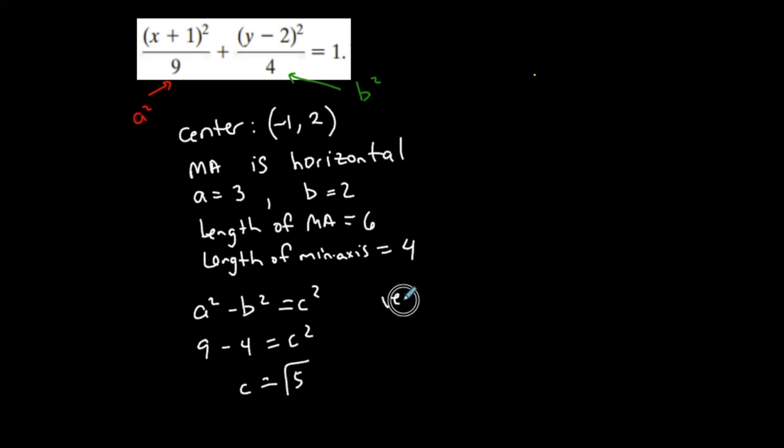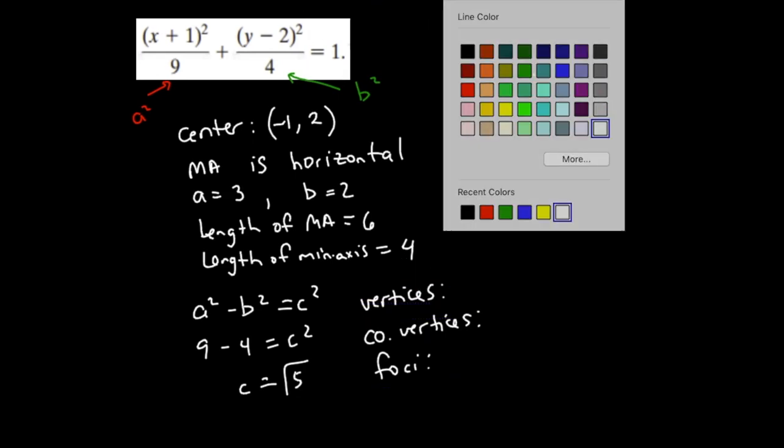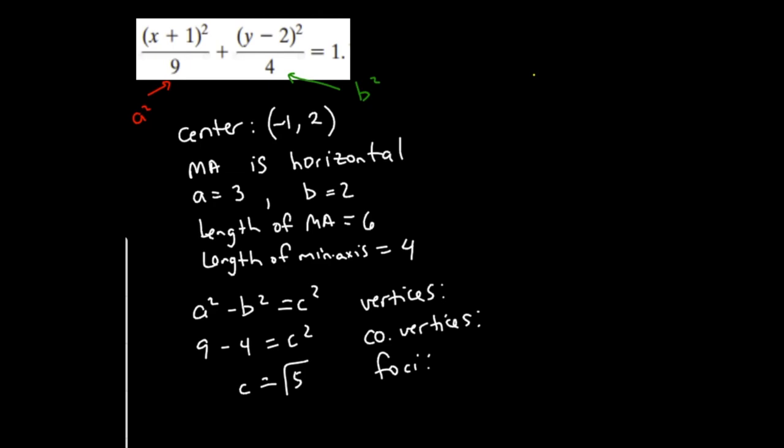I might want to know what my vertices are, what my co-vertices are, and where my ordered pairs are that represent my foci. So I want to find all this out, and then I also want to graph it. What helps you determine some of these ordered pairs is to first graph the ellipse. So let's do that. Let's graph the ellipse.